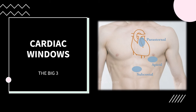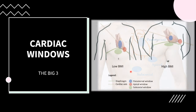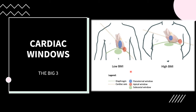In order to image the heart, we need a good sonographic window, and we'll take advantage of the big three windows. First and most important are the parasternal windows, just to the left of the sternum. Next, the apical windows, located at the apex of the heart. And finally, the subcostal or subxiphoid windows, located just under the subxiphoid space. One important point is that when BMI increases, the axis of the heart shifts slightly, with the apex moving farther lateral.